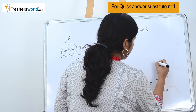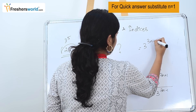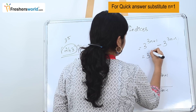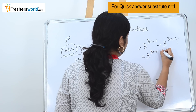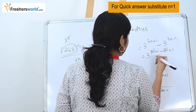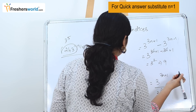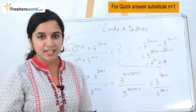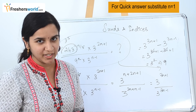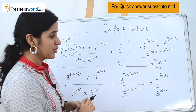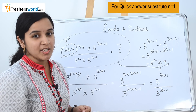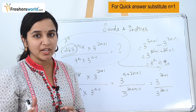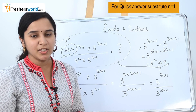Since they are in a division position, this can be written as 3 power (3n plus 1 minus 3n plus 1), which simplifies to 3 power 2 — nothing but 9. So this whole term gives us the value 9. Basically in surds and indices it is all about your simplification technique. The values in the question are very large, but the answer is in a very simplified form. You can see the various ways to find the powers and cancel them down to the smallest term found in the options.